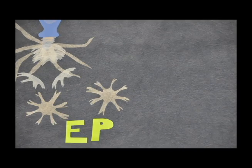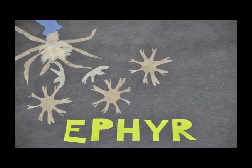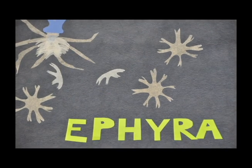They grow into pancakes, a little short stack. Their name is Ephyra and begin as a pack. Each Ephyra will float on its own until it becomes fully grown.